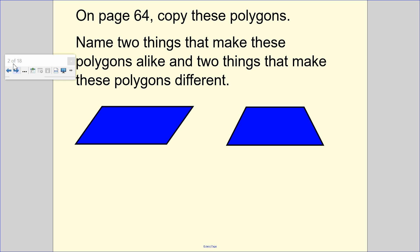On page 64, I would like you to copy down these polygons. Name two things that make them alike and two things that make them different. They look alike. They both have the same height. They have a base and a base. If you flip it over, base and base. And I see diagonal lines.